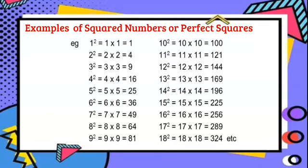Now here are examples of square numbers or perfect squares, ranging from 1 to 18. Where 1 squared is equal to 1 by 1, which is equal to 1, and all the way to 18. 18 squared is equal to 18 multiplied by itself, which is equal to 324.